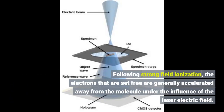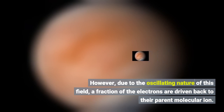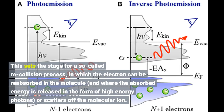Following strong field ionization, the electrons that are set free are generally accelerated away from the molecule under the influence of the laser-electric field. However, due to the oscillating nature of this field, a fraction of the electrons are driven back to their parent molecular ion. This sets the stage for a so-called re-collision process, in which the electron can be reabsorbed in the molecule, and where the absorbed energy is released in the form of high-energy photons, or scatters off the molecular ion.